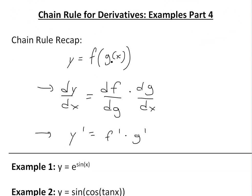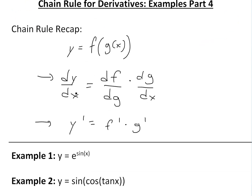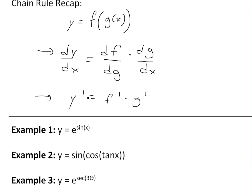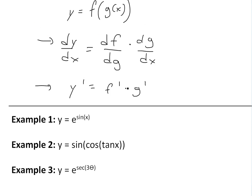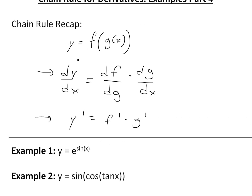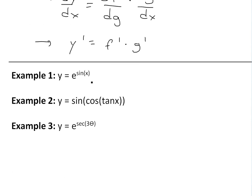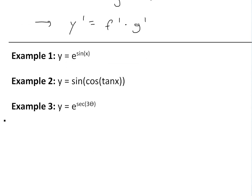The chain rule basically states if you have a function within a function like f of g of x, then the derivative dy/dx is just going to be the derivative of f in terms of g, multiplied by the derivative of g in terms of x, or you could write it as y prime equals f prime times g prime. You can see the proof for this in the video links below. So now let's go over these three examples.